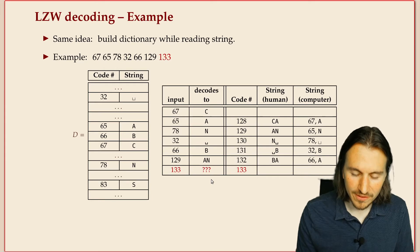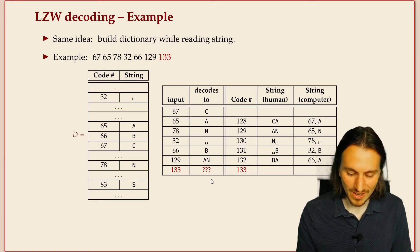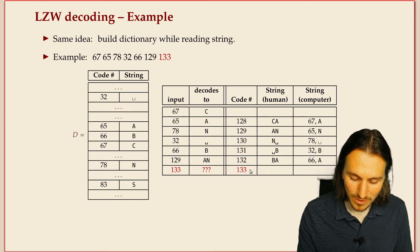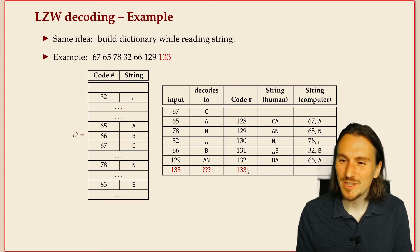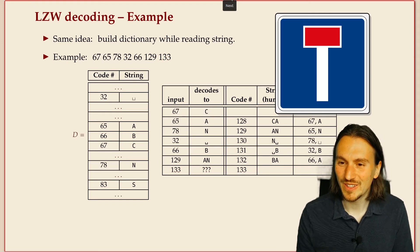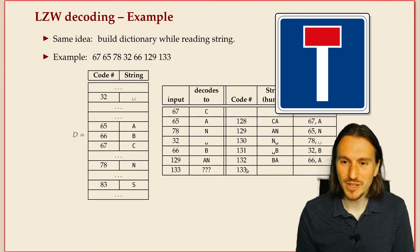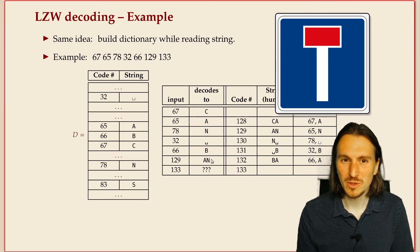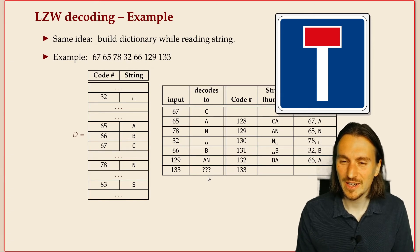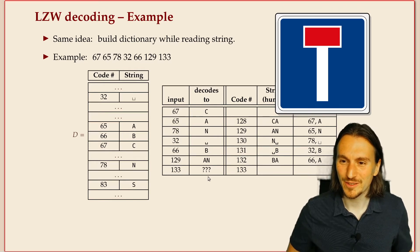We move along until we run into a situation where we're trying to use a code that is the next free one — we don't know what it decodes to yet. We would need information that the encoder put in after encoding this phrase, but we only get that information after decoding the next phrase. This seems like a dead end — that's a tricky situation that arises in LZW decoding.